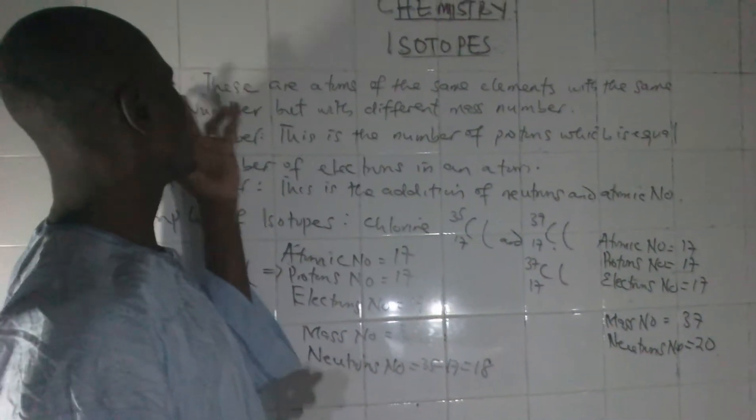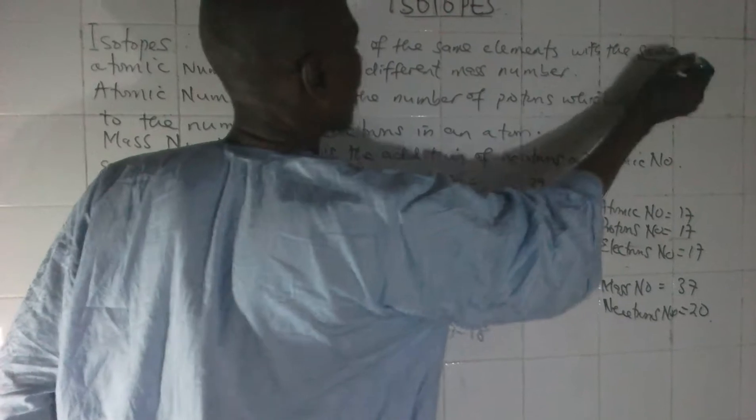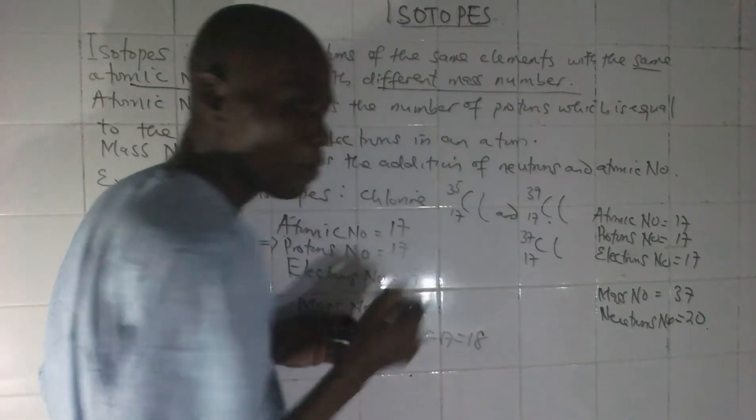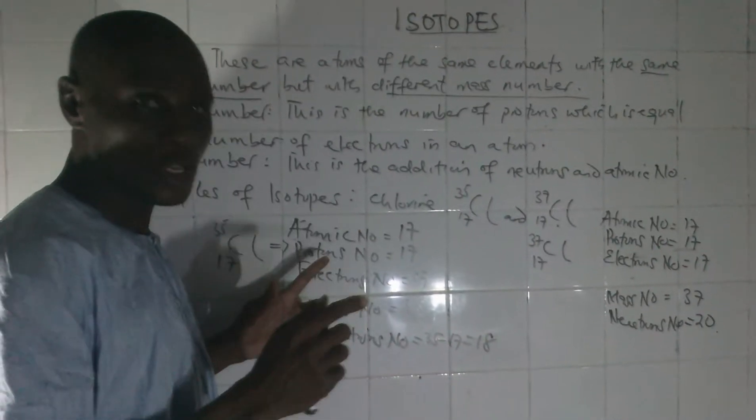It's on the board. We are rotating. These are atoms of the same element having the same atomic number but different mass number. That's called isotope.